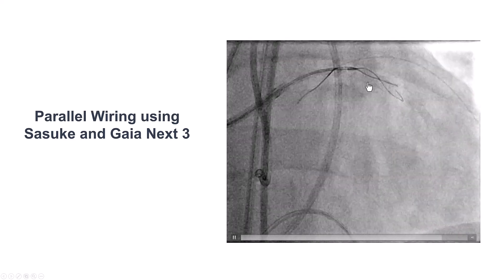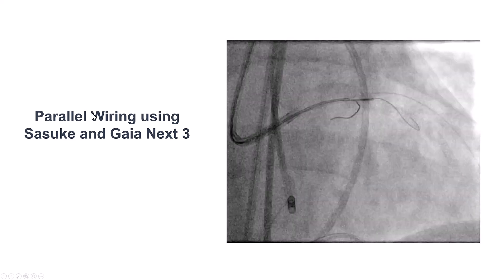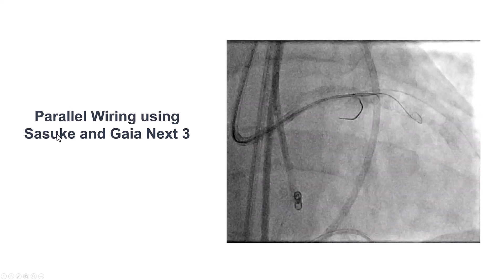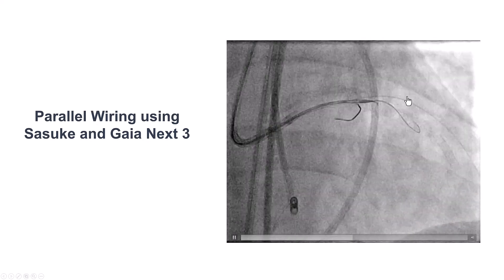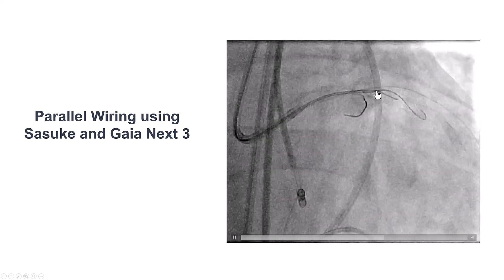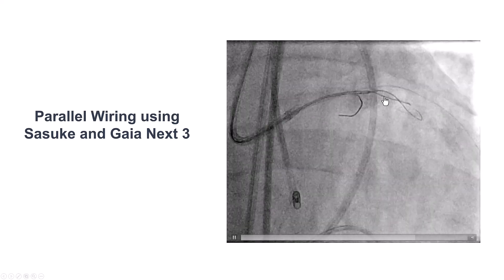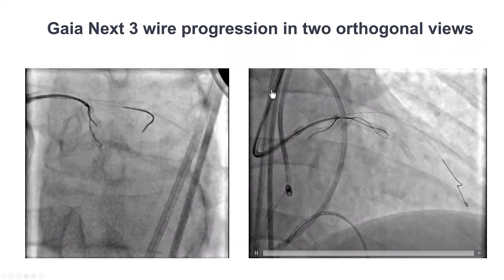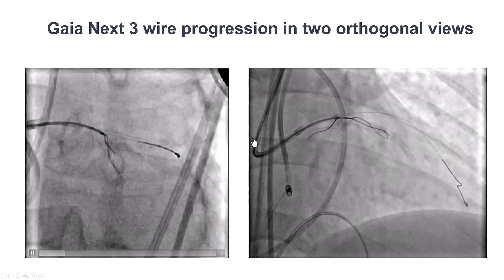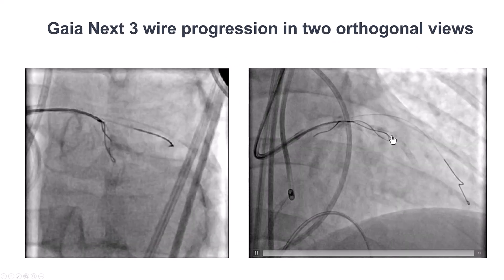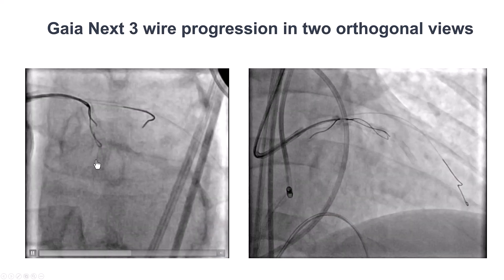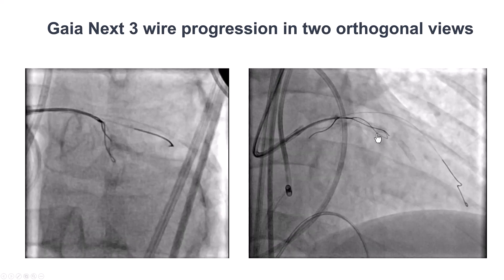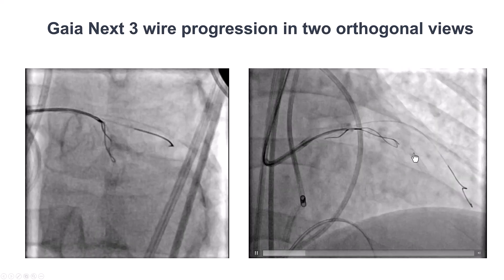The other option is to leave the existing wire in place and then try parallel wiring, which can be facilitated by using a dual-lumen microcatheter. So we brought in a Sasuke and a Gaia-NX3 and tried to navigate, and we can see that the wire is actually moving in a different course that seems to be more inside the stent. We did use different projections to confirm that the wire was moving inside the stent — both RAO and LAO cranial views — and we can see that the Gaia-NX3 is moving in the right direction.